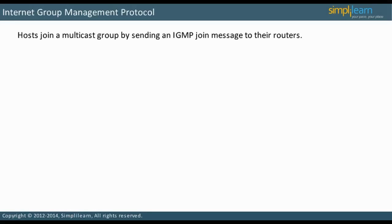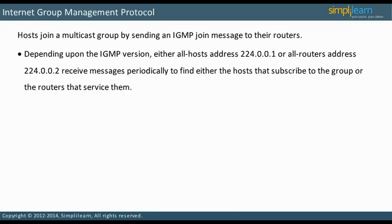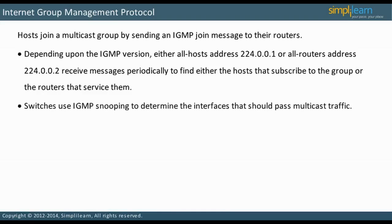Hosts join a multicast group by sending an IGMP join message to their routers. Depending upon the version, IGMP messages are sent to either the all-host address 224.0.0.1 or the all-routers address 224.0.0.2. These messages discover the routers and hosts involved in the multicast stream. Switches are also involved in IGMP. A switch uses IGMP snooping to listen for messages passing between IGMP routers and their hosts, and in this way it determines which of its interfaces pass multicast traffic.